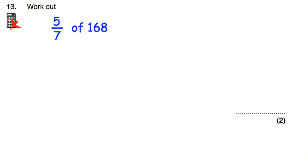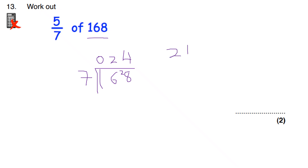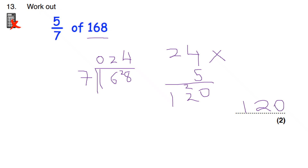Last question: find five sevenths of 168. Divide by the denominator first: 168 divided by 7 using the bus stop method — 7 into 16 goes twice remainder 2; 7 into 28 goes 4 times — so one seventh of 168 is 24. Then multiply by the numerator: 24 times 5 is 120. So five sevenths of 168 is 120.